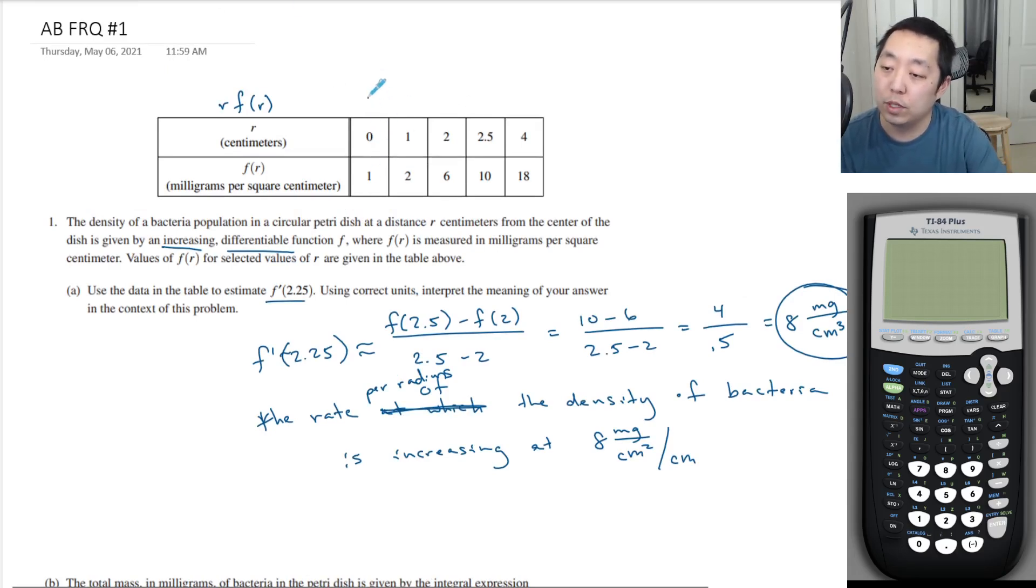So, 0 times 1 is 0, 1 times 2 is 2, 2 times 6 is 12, 2.5 times 10 is 25, and 4 times 18 is 72, I think. Yeah, 32 plus 40, yeah 72. Okay.